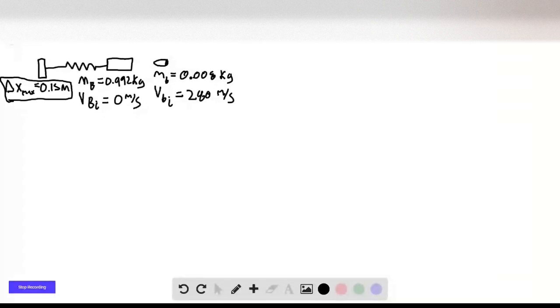Okay, so this problem combines momentum conservation with energy conservation. The first thing we need to do is figure out how fast the block and bullet are moving after contact when they're stuck together.